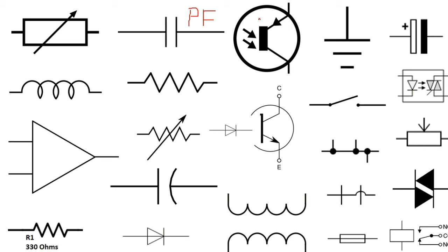This is a transistor, but this symbol is not for a normal transistor — this is a phototransistor. Why? Because we have here two arrows. It means the signal that enables this transistor is not current or voltage, but light. So this is a phototransistor. Here we have the same principle: this is a photodiode.